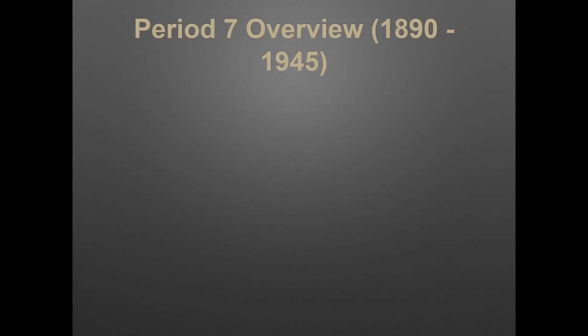Here's the overview for Period 7. It's Period 7 on the AP exam. It goes from 1890 to 1945. It's roughly 10 to 17 percent of the curriculum. It is the largest chunk of time, and usually it's tested a lot on the exam. I'll show you the numbers on the next slide.